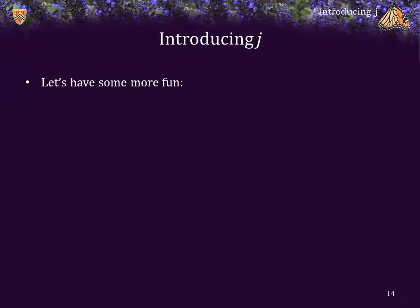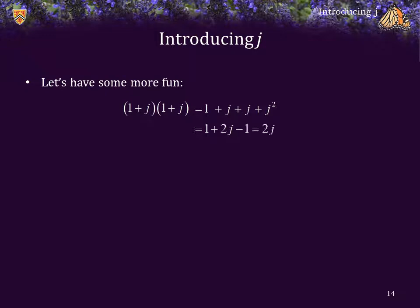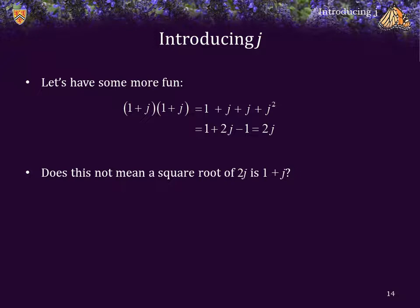Let's multiply 1 plus j times 1 plus j — let's square 1 plus j. Using FOIL: first, 1 times 1; outside, 1 times j, which is j; inside, j times 1, which is j; and last, j times j, which is j squared. Simplifying, we have 1 plus 2j plus negative 1, which equals 2j, as the 1 cancels with the negative 1. So if 1 plus j squared is 2j, does this not mean that the square root of 2j is 1 plus j? Yes — that's by definition what a square root is.